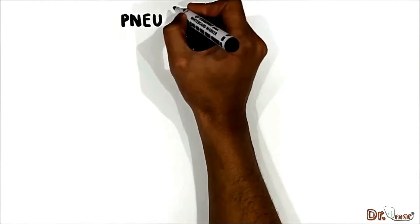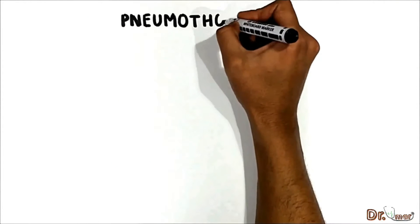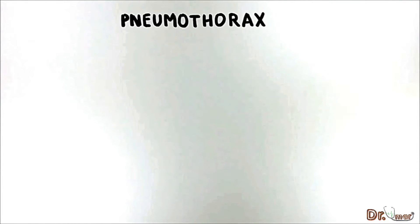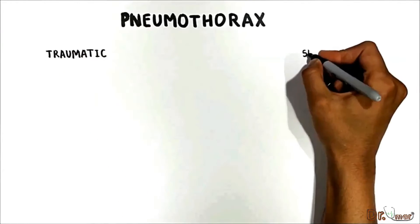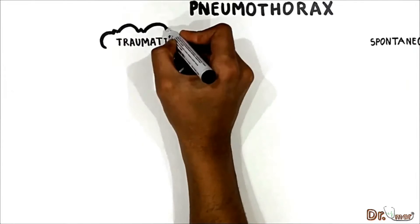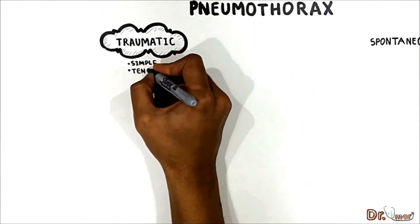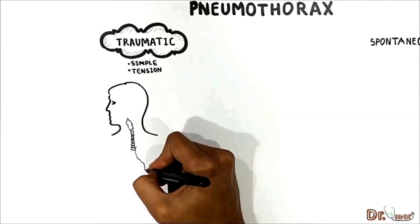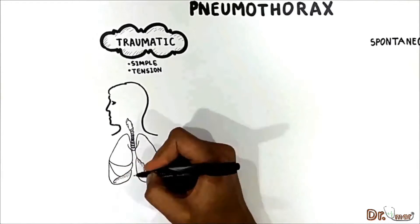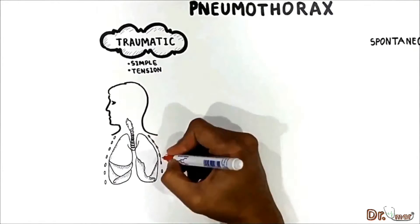In this video we will talk about pneumothorax. Pneumothorax is air in the pleural space causing partial or complete lung collapse. Pneumothorax may either be traumatic or spontaneous. Traumatic pneumothorax may be simple or tension pneumothorax.